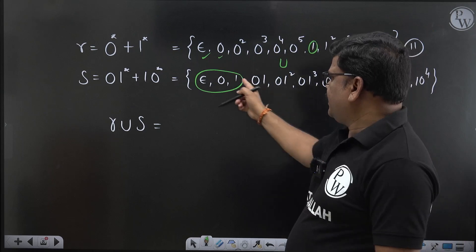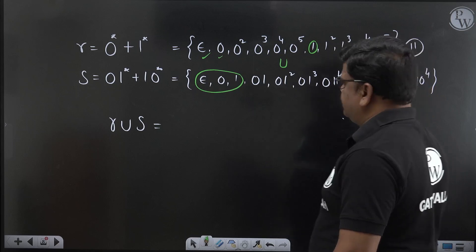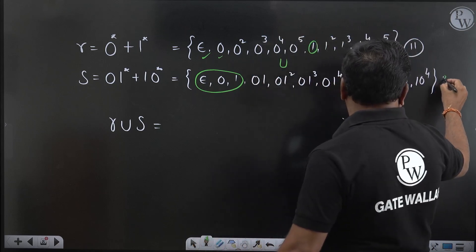Here 11, then remove these three because epsilon, 0, 1 is there here. The union does not include these three, remaining 1, 2, 3, 4, 5, 6, 7, 8. So 8 from this.